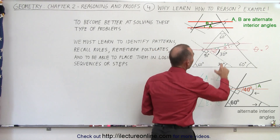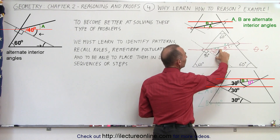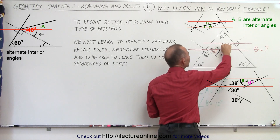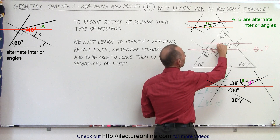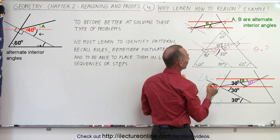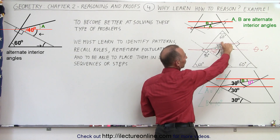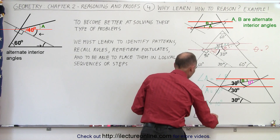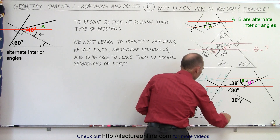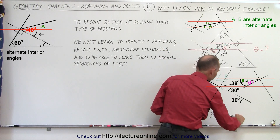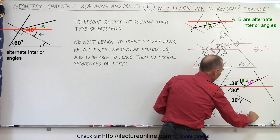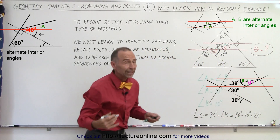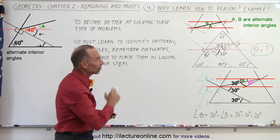If the angle from this line to this line is 30 degrees, then for the very same reason on the other side, that angle must also be 30 degrees. So finally, the measure of angle theta equals 30 degrees minus the measure of angle B. Since the measure of angle B is 10 degrees, that is 30 degrees minus 10 degrees, which equals 20 degrees. So the measure of angle theta ends up being 20 degrees.